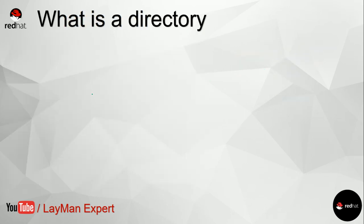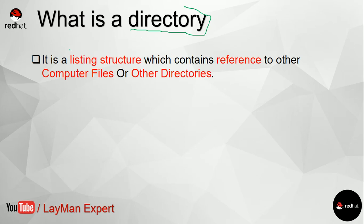Before we start discussing the directory structure, let's first clear our basics about what a directory actually is. A directory is a listing structure which contains references of other computer files and other directories. A file is a structured record — it holds a lot of information. But a directory is just a listing structure; it does not contain files, it just gives you a view of files by way of listing, and that listing contains references, not the files themselves.